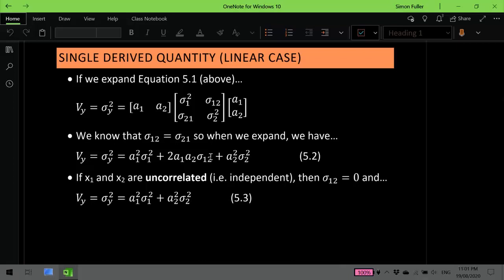Now, if we were actually dealing with uncorrelated measurements, so x₁ is not correlated with x₂, which happens quite a lot in surveying applications, then it would be the case that the measurements are independent, and that covariance term would be 0,